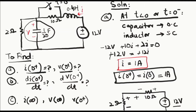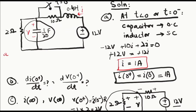To find the capacitor voltage V, the capacitor is in parallel with the 2-ohm resistor. Since voltage in parallel is the same, we find the voltage across the 2-ohm resistor, which is 2 volts. So V(0−) = V(0+) = 2 volts. These values from part A will be used further in the solution.